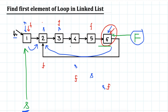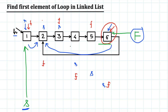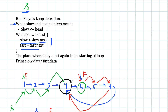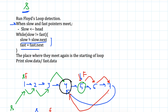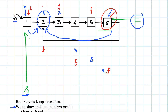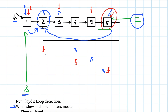This is the algorithm used to detect the first element of the loop — to find the first element of the loop. Let's write the code for that. I will explain why this algorithm works in more detail in the next video, as it will take some time to understand.